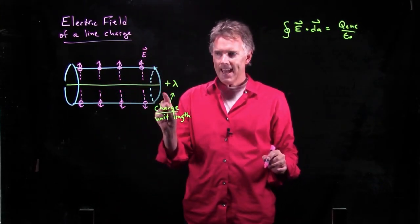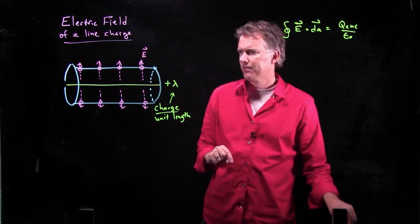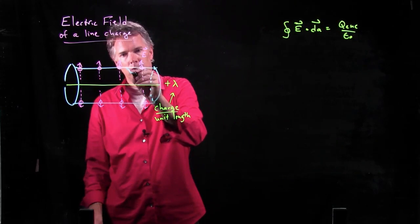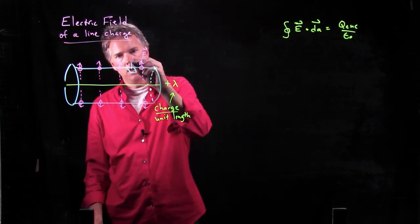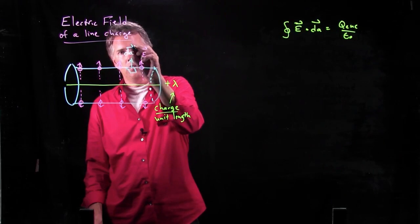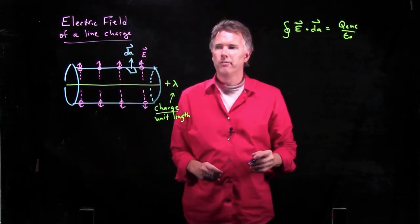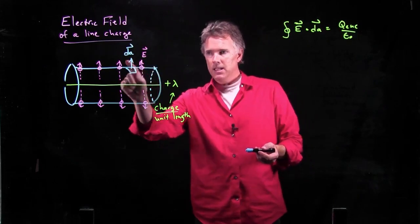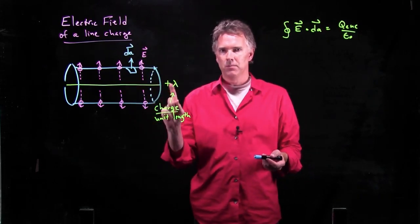The E field lines are coming out radially. What about dA for this particular surface? Well, dA is going to look like this. It's a little chunk of this can, and the dA is also radially outward from the center. So E and dA are in the exact same direction.